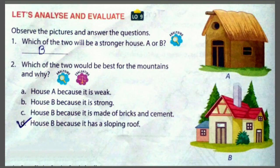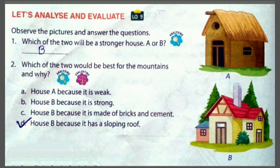'Let's Analyze and Evaluate': two pictures are given — kuccha house and pukka house with sloping roof. First: which of the two will be a stronger house? Answer: B — the pukka house is stronger. Second: which would be best for the mountains and why? House B, because it has a sloping roof so snow easily slides down.